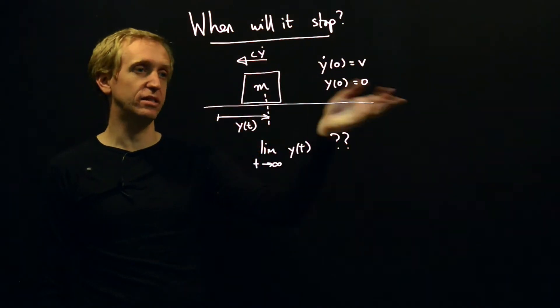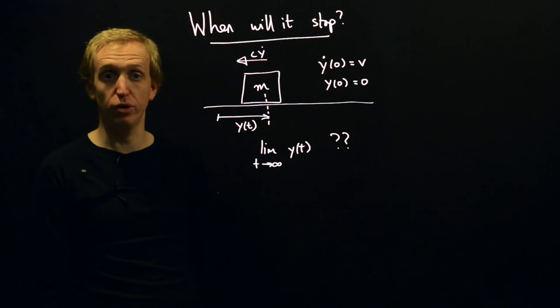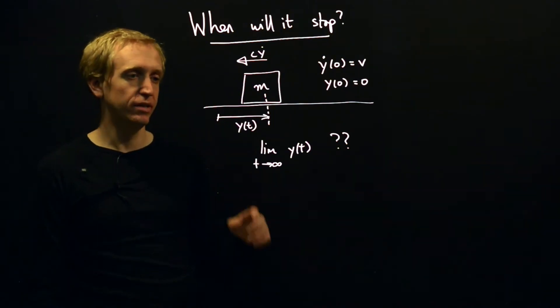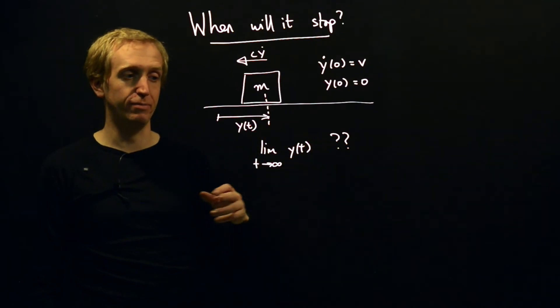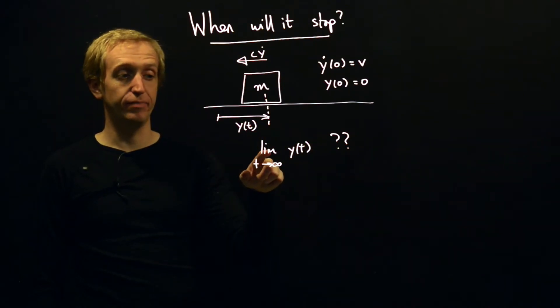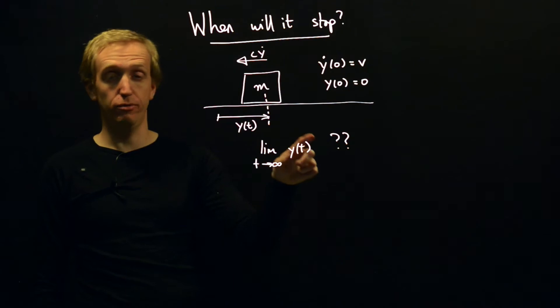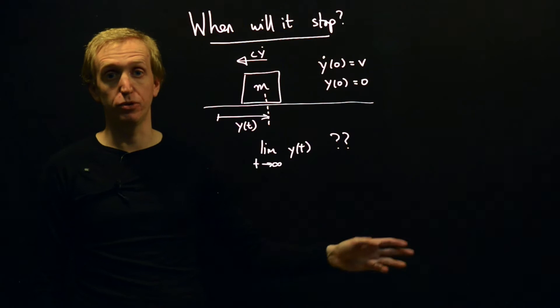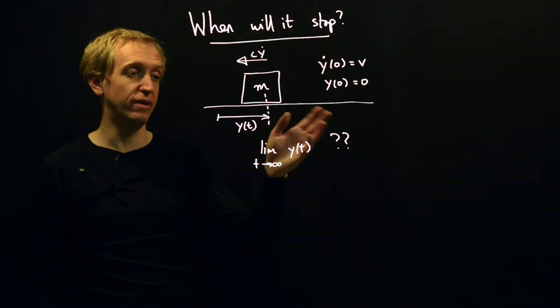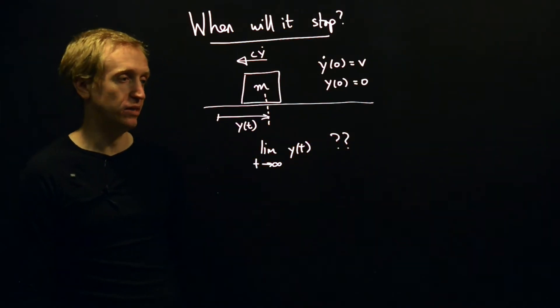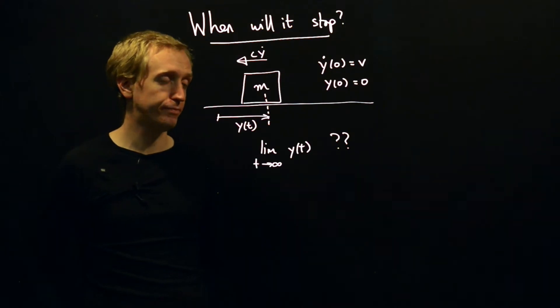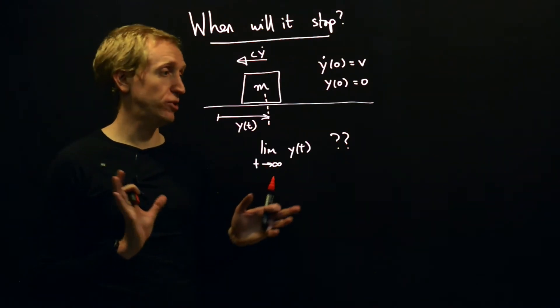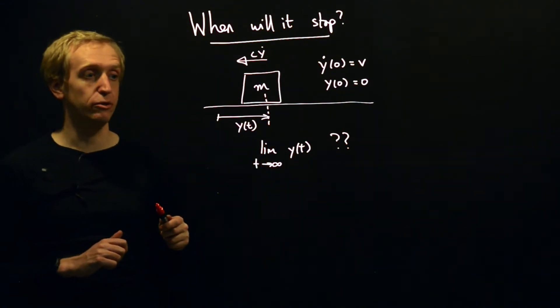We have this mass. It's sliding along with some initial velocity. There's a force trying to stop it. How far is it going to go before it stops? Or written mathematically, what is the limit of the value or the position of our car as time goes to infinity. So the value of the position of our car when time gets very very large. And we're going to do this, we're going to answer this with some Laplace transform techniques. And the technique is the final value theorem.